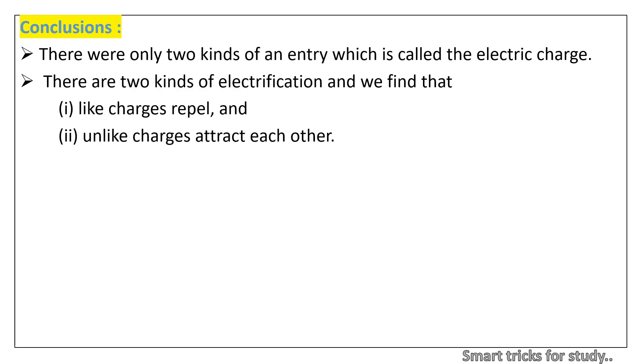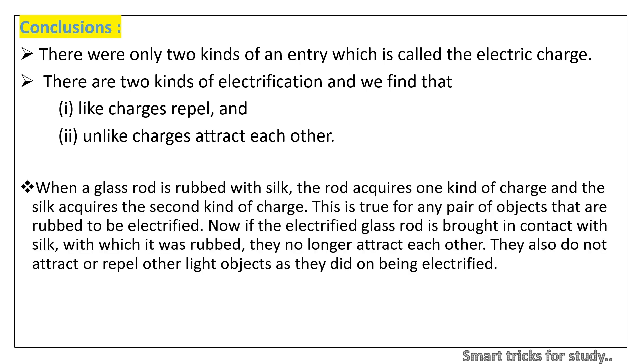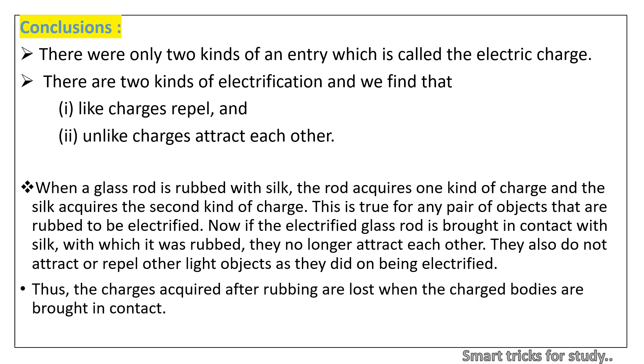Conclusions: There were only two kinds of an entity which is called the electric charge. There are two kinds of electrification and we find that: one, like charges repel, and two, unlike charges attract each other. When a glass rod is rubbed with silk, the rod acquires one kind of charge and the silk acquires the second kind of charge. This is true for any pair of objects that are rubbed to be electrified. Now if the electrified glass rod is brought in contact with silk with which it was rubbed, they no longer attract each other. They also do not attract or repel other light objects as they did on being electrified. Thus, the charges acquired after rubbing are lost when the charged bodies are brought in contact. Unlike charges acquired by the objects neutralize or nullify each other's effect.